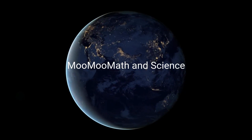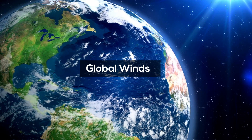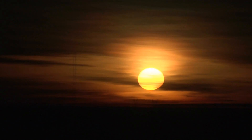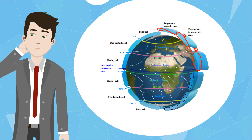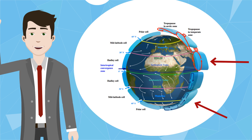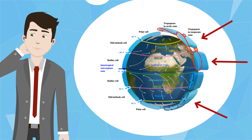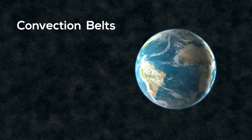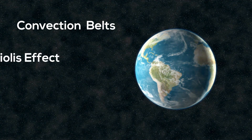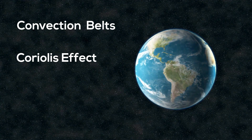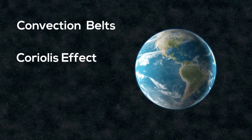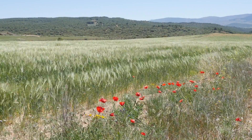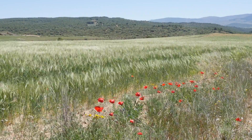Welcome to MooMath and Science and Global Winds. The Earth is not heated evenly. This uneven heating of the Earth produces pressure belts, and these pressure belts occur at about 30 degrees of latitude. The combination of these convection belts and the Coriolis effect, which is the curving of the path of winds and the oceans due to the Earth's rotation, causes global wind patterns. In this video, I'd like to look at the major global winds.